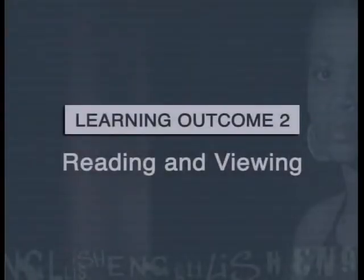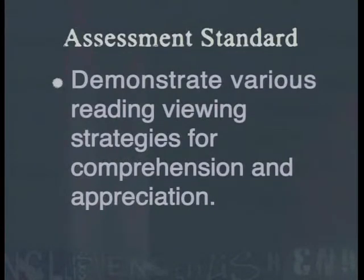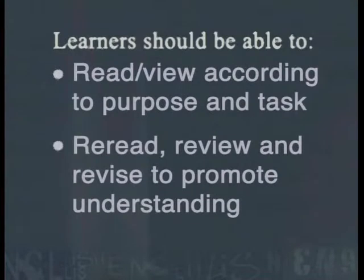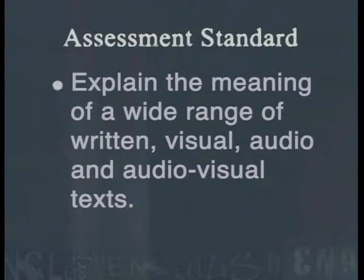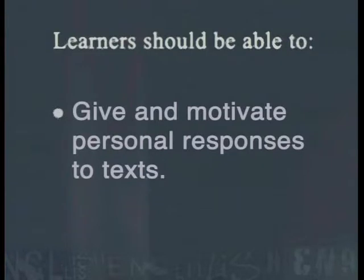The following lesson is linked to Learning Outcome 2, Reading and Viewing. It addresses the assessment standard that requires learners to demonstrate various reading and viewing strategies for comprehension and appreciation. Learners should be able to read and view according to purpose and task, and to re-read, review and revise to promote understanding. This lesson also addresses the assessment standard which requires learners to explain the meaning of a wide range of written, visual, audio and audio-visual texts, and to give and motivate personal responses to texts.